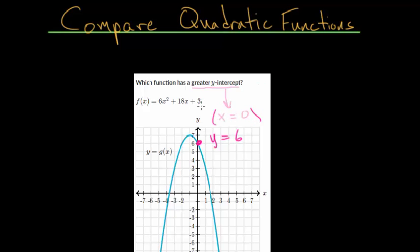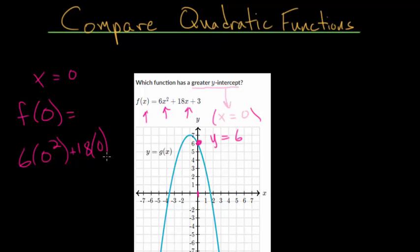The reason I wrote this in here to make it explicit is we're going to use this information. Because think about it, any point on this line has the same x value. They all have an x value of 0. So if we just plug in 0 to our function, then we can figure out what the y value is. So I'm going to set x equal to 0. So we have f of 0. We're just replacing the x with 0. And when we do that, we get 6 times 0 squared plus 18 times 0 plus 3.